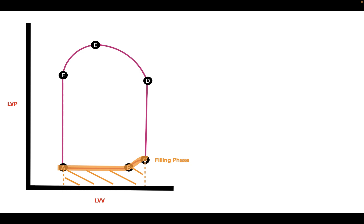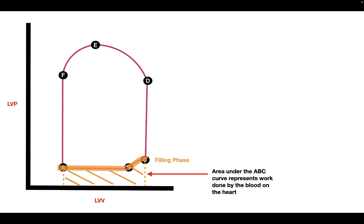We can measure the area underneath the filling phase curve, called the ABC area. This area represents the work done by the blood on the heart. Blood is doing work on the heart because as blood enters, both the pressure is changing and the volume is increasing — so the blood is expanding the volume and therefore doing work on the heart.